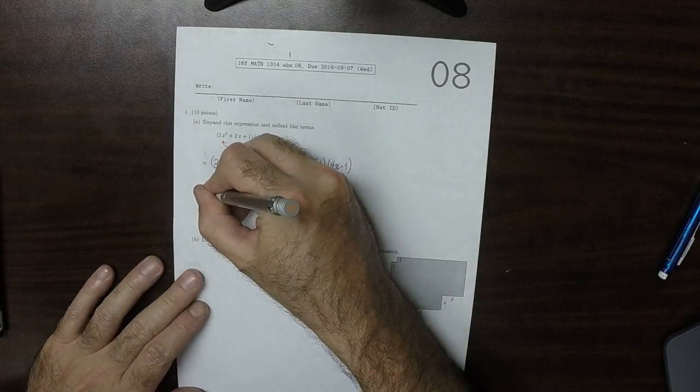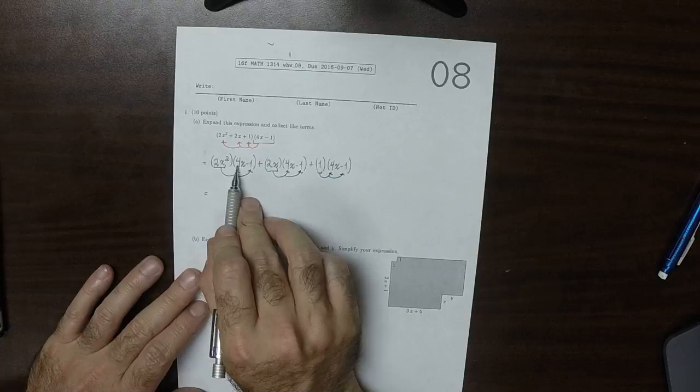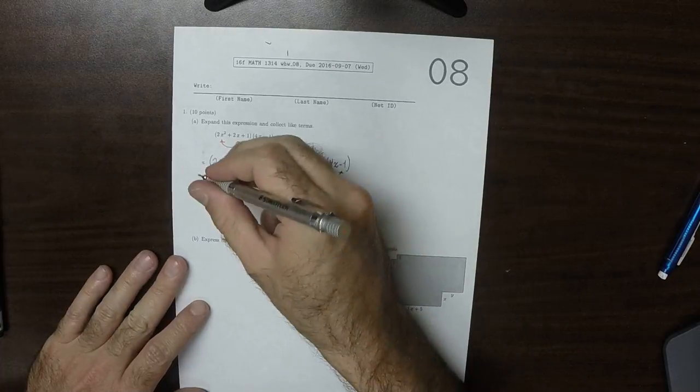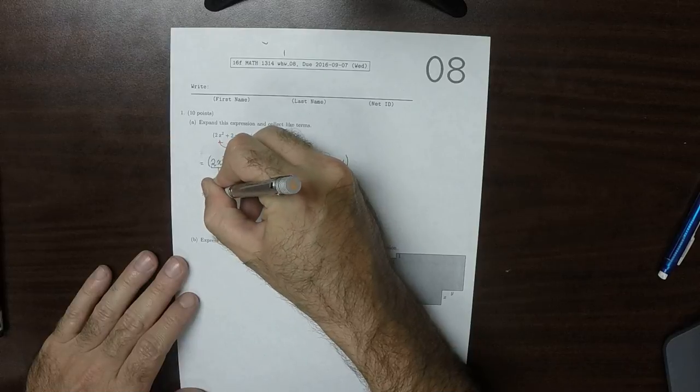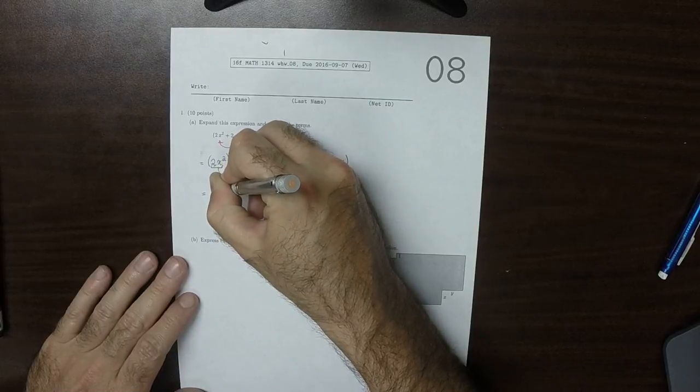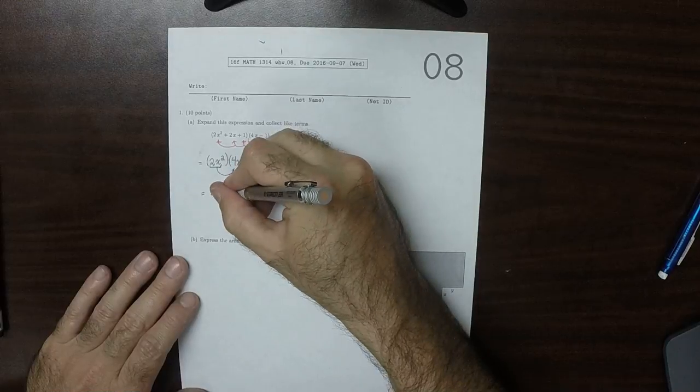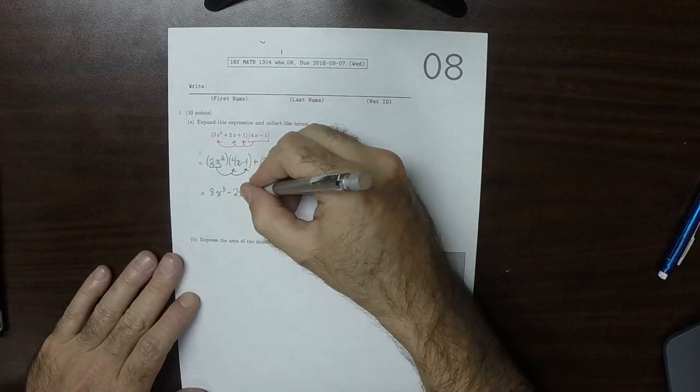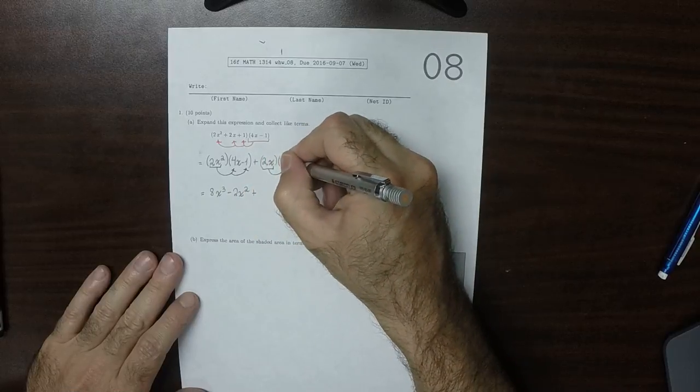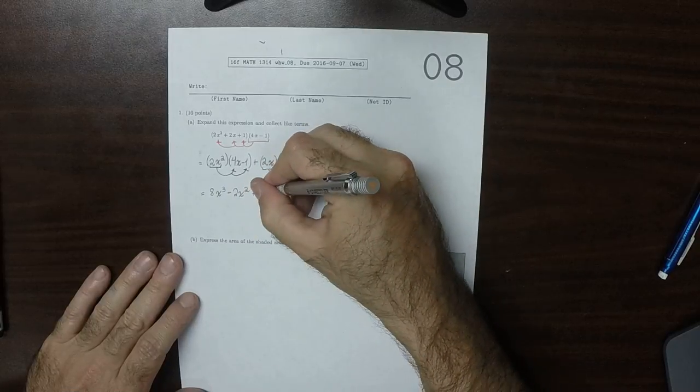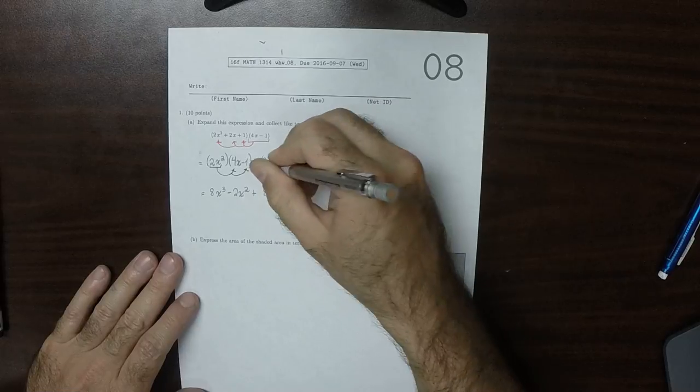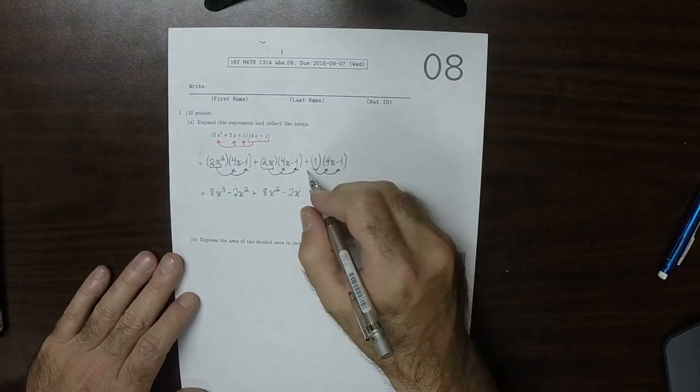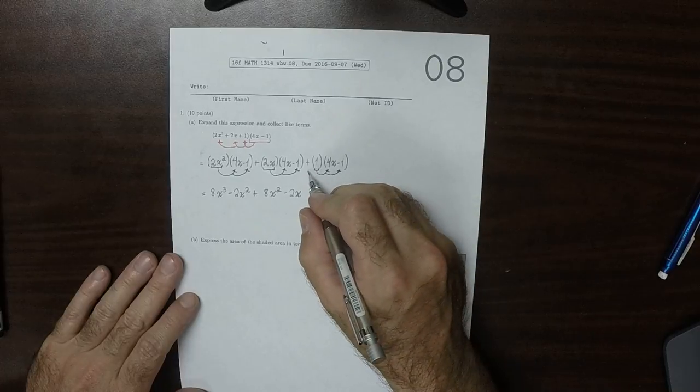So that would be 2 times 4 is 8, and x squared times x is x cubed. So that would be 8x cubed, and then minus 2x squared. And then plus 2x times 4x, well, that's 8x squared. And then minus 2x, and then plus 4x minus 1.